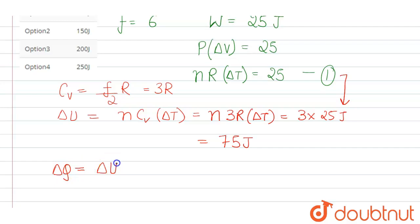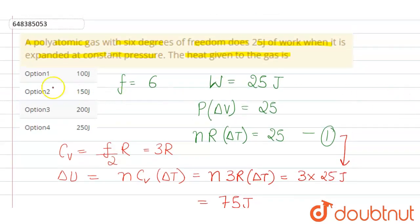So as a result, if we use here first law of thermodynamics, delta Q equals delta U plus W, so we get 75 joules plus 25 joules, which means it equals 100 joules.